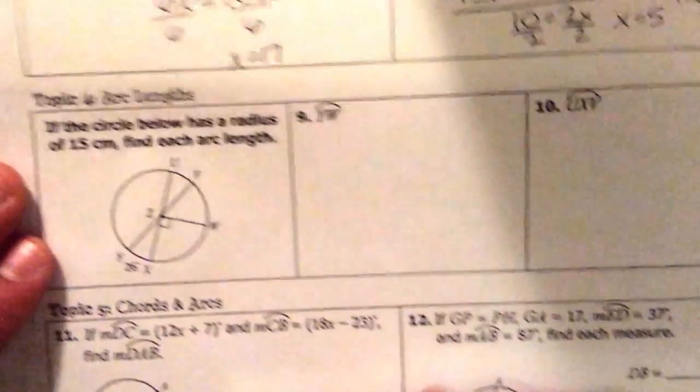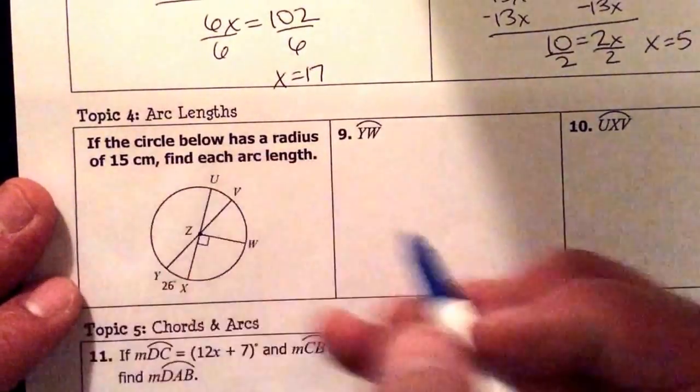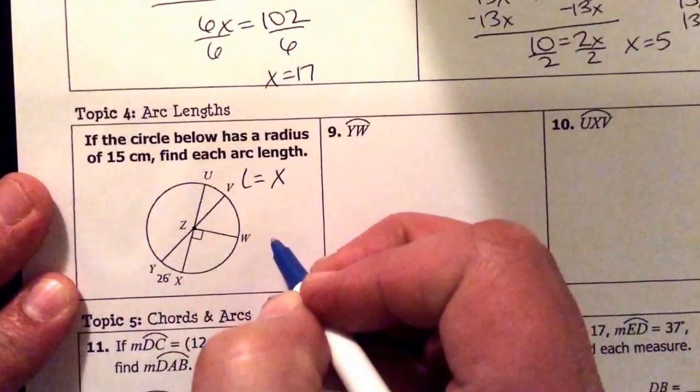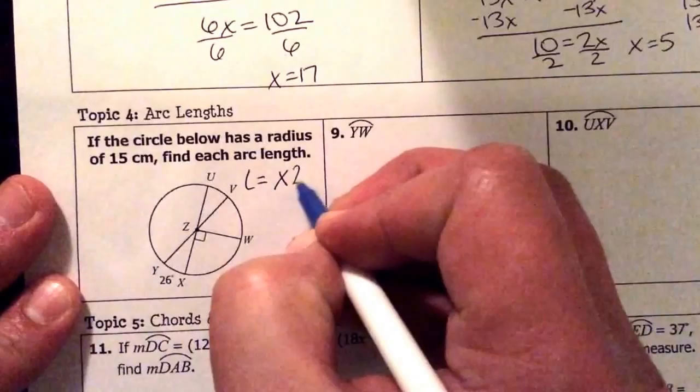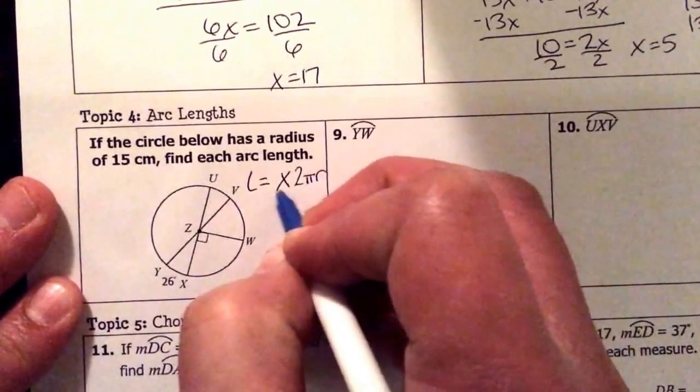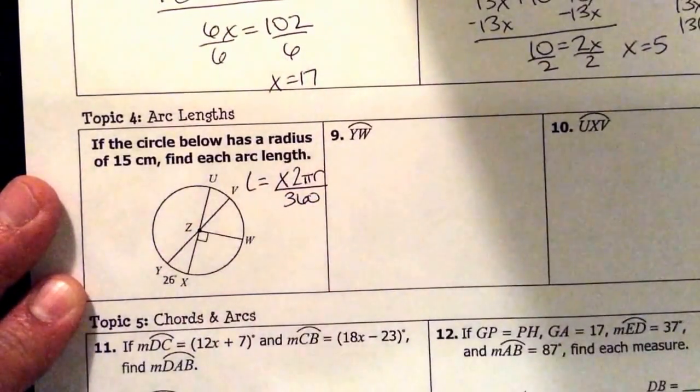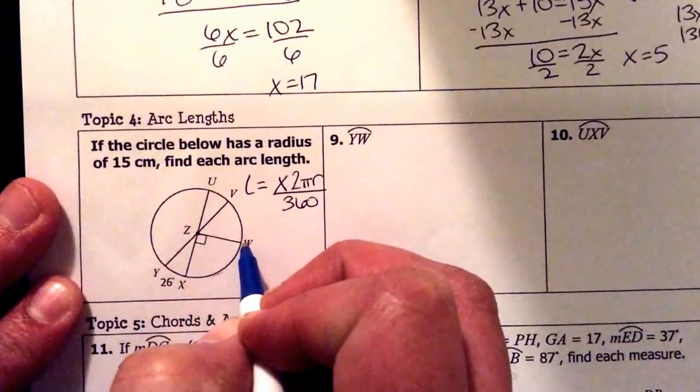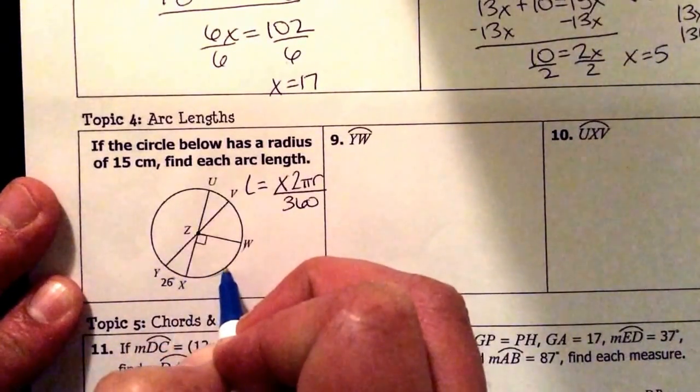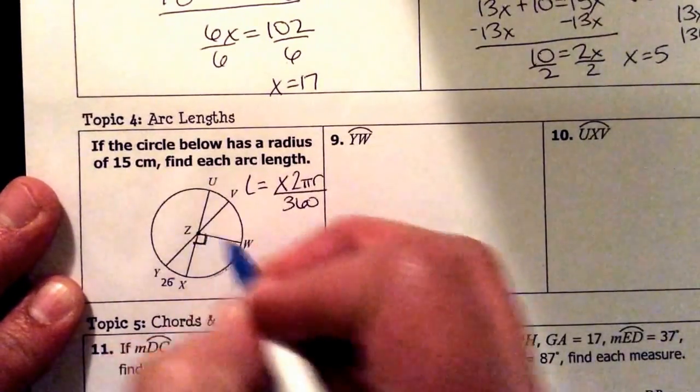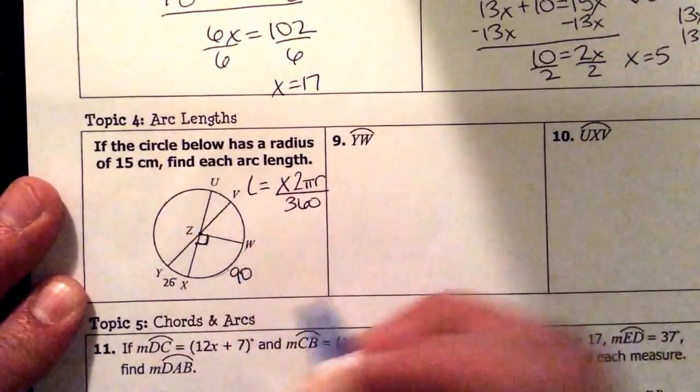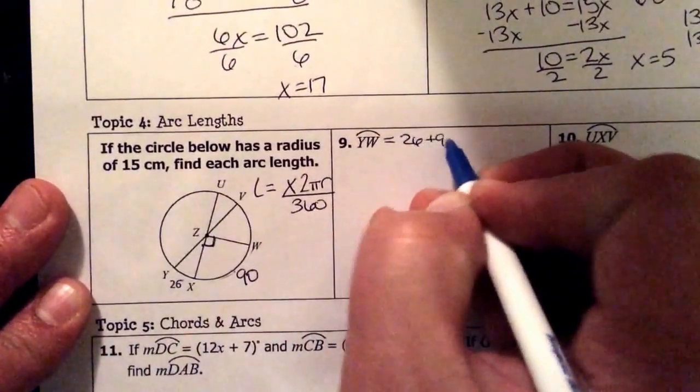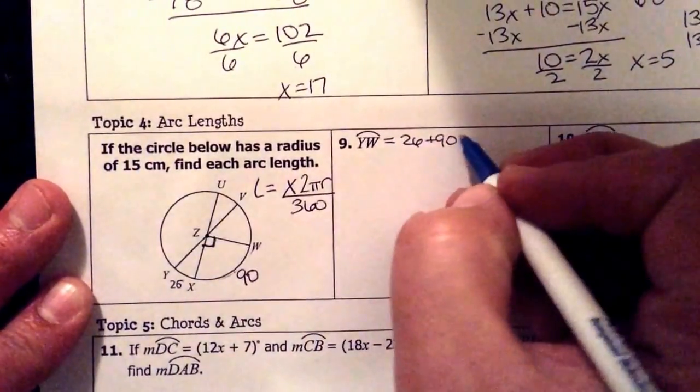The next question is they're going to ask us for arc lengths. We have to remember that the formula for our arc length is x which is our number of degrees times 2πr which is our circumference divided by 360. So they're first looking for Y to W. Now what I do notice is this is 26 but I don't have that. However I do know that's a right angle which means this is 90, which means Y to W is 26 plus 90. That gives us 116.